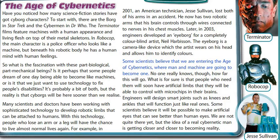Some scientists believe that we are entering the age of cybernetics where man and machine are going to become one. No one really knows, though, how far this will go. What is for sure is that people who need them will soon have artificial limbs that they will be able to control with microchips in their brains. Engineers will design smart joints, such as knees and ankles, that will function just like real ones. Some scientists believe it will be possible to make artificial eyes that can see better than human eyes. We are not quite there yet, but the idea of a real cybernetic man is getting closer and closer to becoming reality.